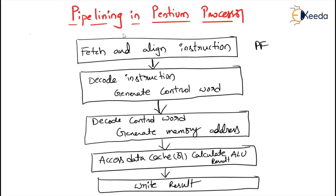Coming to the prefetch stage — we can call it PF. During the prefetch stage, the CPU prefetches the code from the instruction cache and aligns the code to the initial byte of the next instruction to be decoded. Because instructions are of variable length, this stage includes buffers to hold both the line containing the instruction being decoded and the next consecutive line.